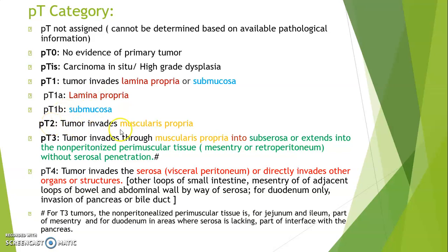T2 is when tumor invades muscularis propria. T3 is when tumor invades through muscularis propria into the subserosa or extends into the non-peritonized perimuscular tissue, mesentery, or retroperitoneum without serosal penetration. For T3 tumors, the non-peritonized perimuscular tissue for jejunum and ileum is part of the mesentery, and for duodenum in areas where serosa is lacking, it is part of the interface with the pancreas.